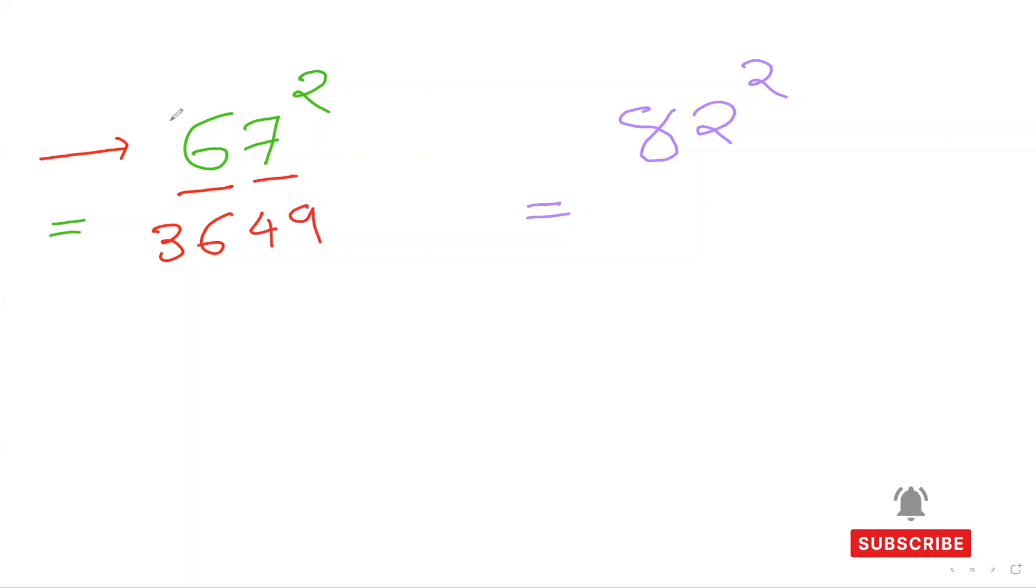And then I'll do 6 times 7, which is 42, times 2. 42 times 2, which is 84, which I can put down here. And then I can just add them up, which is 9, 8, 6 plus 8 is 14. 1 here. So 4489 is my answer, guys.